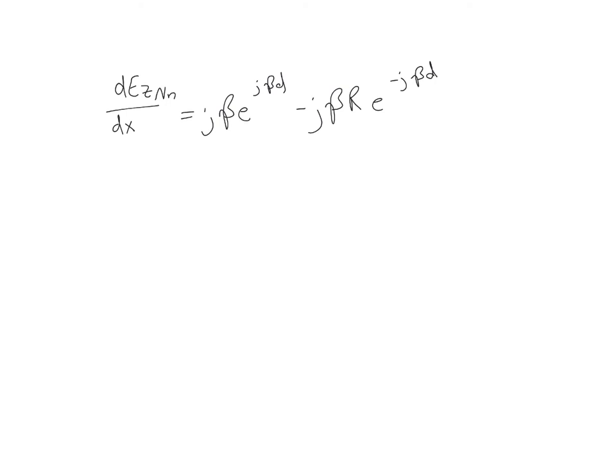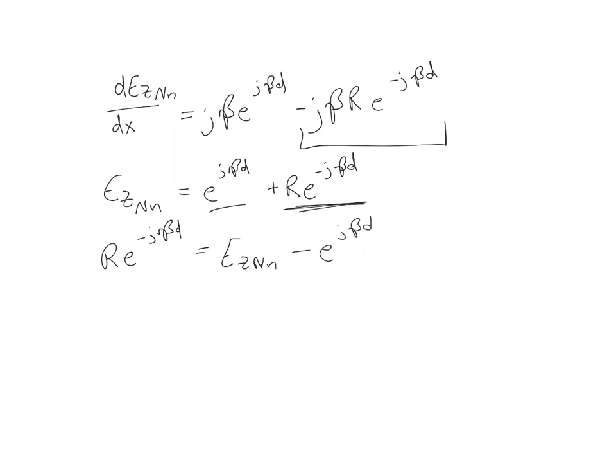In general, we won't know what the reflection coefficient will be. So in place of the last term here, let's use the original equation we have with e not equal to zero. So we have ez nn was equal to e to the j beta d plus r e to the minus j beta d. So if we solve for this term, we get r e to the minus j beta d is equal to ez nn minus e to the j beta d.